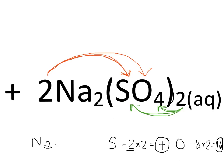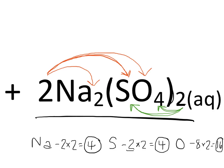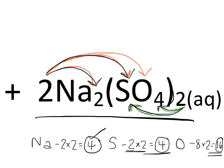And then lastly for Na, we take this coefficient of two and multiply it by the subscript of two on Na — two times two gives us four sodium atoms. So in this entire compound, we have four sodium atoms, four sulfur atoms, and 16 total oxygen atoms, because two times four is eight, and eight times two gives us 16.